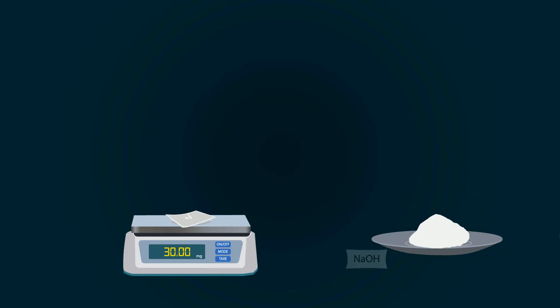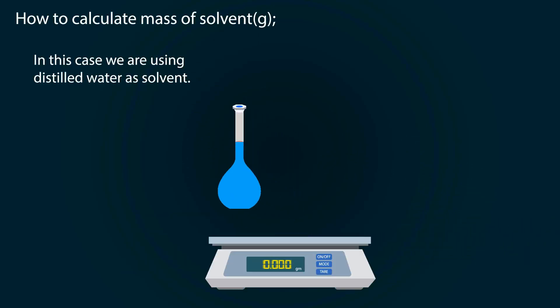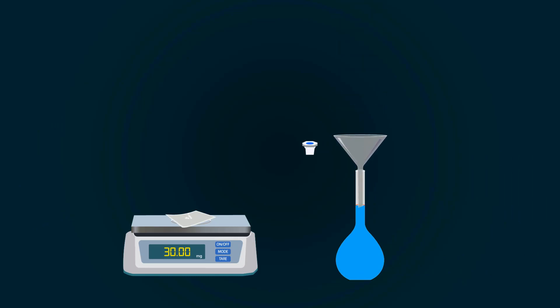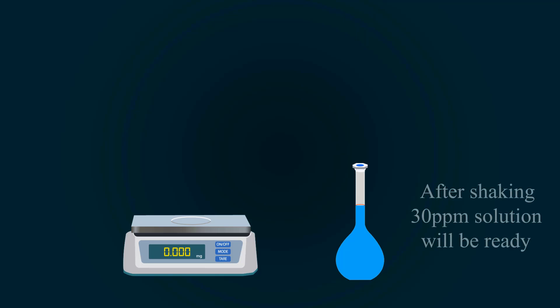Now put this 30 mg into the volumetric flask which contains distilled water. Please add the solute with the help of a funnel. After adding, close the volumetric flask and shake it well. After shaking, you will get 30 ppm solution of any solute.